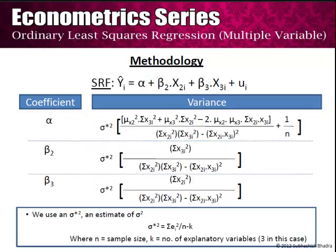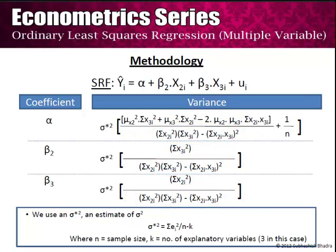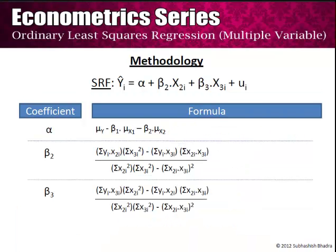Now let us talk about the variances of those coefficients. These formulas seem to be even more complicated than the previous ones, but again note that the denominator in all three cases is the same. It is summation of x₂ᵢ² into x₃ᵢ² minus summation of x₂ᵢ·x₃ᵢ whole square, which is the same as the denominator of β₂ and β₃.